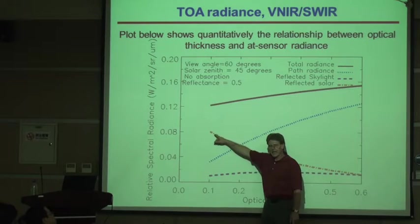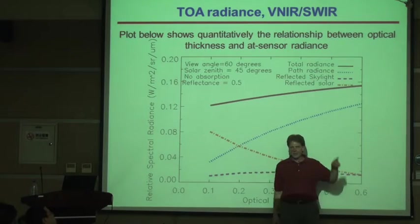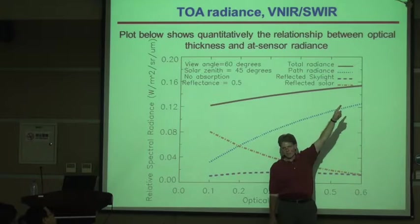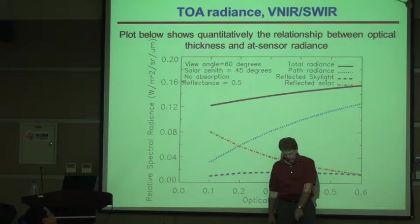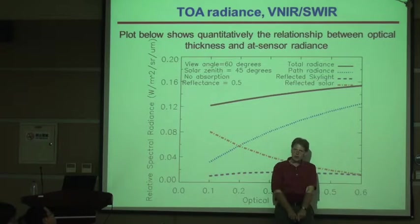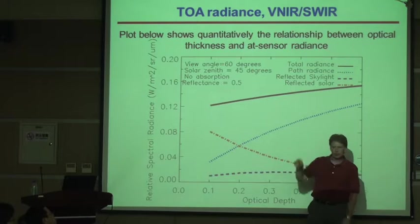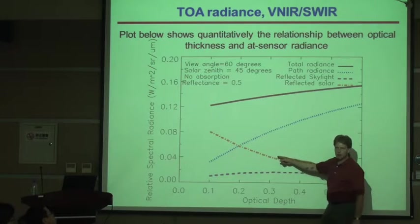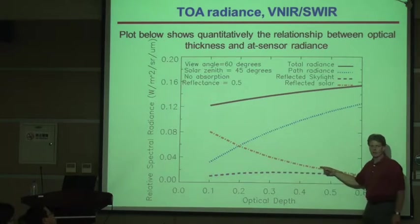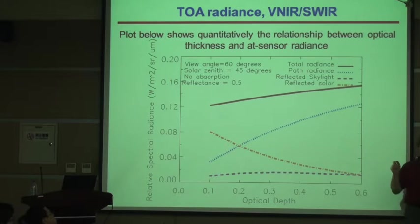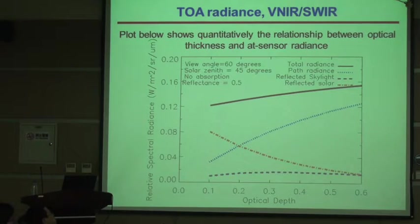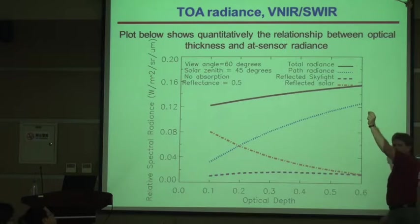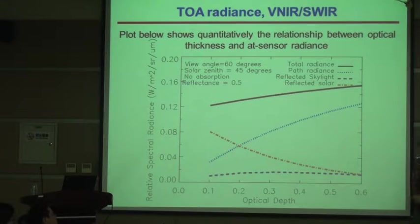Let's start with the direct solar component. A photon comes from the sun, gets through the atmosphere, bounces off the ground, and makes it back through the atmosphere. As we increase the optical thickness, what happens to the number of photons going from the sun to the ground directly to the sensor? The answer: it goes down.